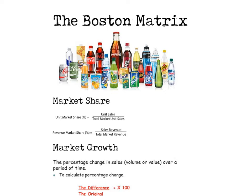What the Boston Matrix does is it allows a firm to analyze their product portfolio and consider their best performing products. It calculates the market share of each product — you can do it based on unit market share or revenue market share. For example, if you're looking at Diet Coke, you'd look at the sales of Diet Coke within the market, then look at the total market unit sales or total market revenue within the fizzy drink industry. This gives an understanding of how well their product is doing in comparison to all their competitors and their products within the portfolio. That's one of the axes — market share.